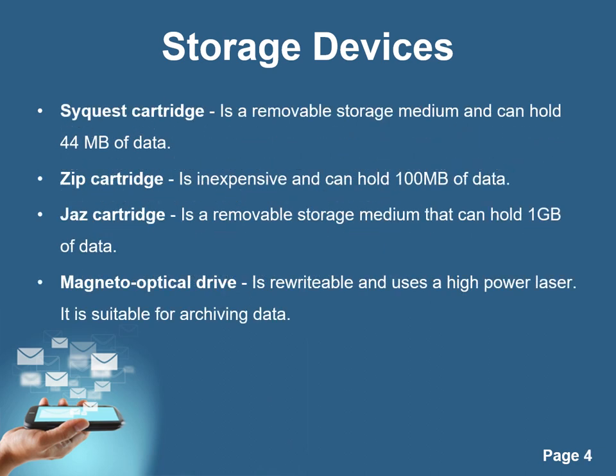Zip cartridge is a removable storage medium and can hold 44 MB of data. Zip cartridge is inexpensive and can hold 100 MB of data. Jazz cartridge is a removable storage medium that can hold 1 GB of data.